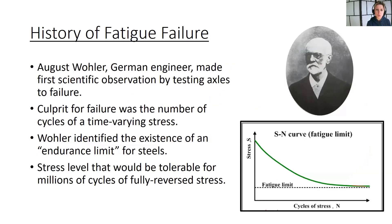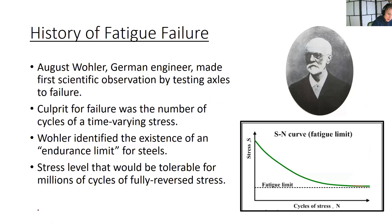A man named August Wöhler, a German engineer, began testing axles to failure in a systematic way. He discovered a really interesting relationship between the number of loading cycles and an axle's strength. Simply put, the strength of the axles diminished as a function of the number of loading cycles, and that is depicted in what we call the S-N curve — fatigue strength as a function of the number of cycles. So as cycles go up, the material's strength essentially goes down.